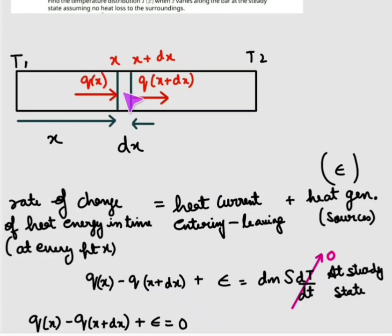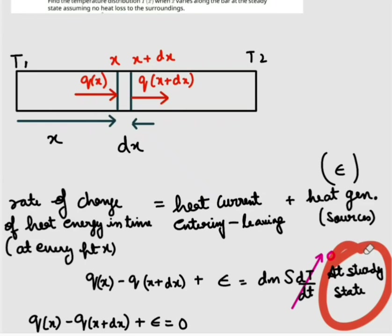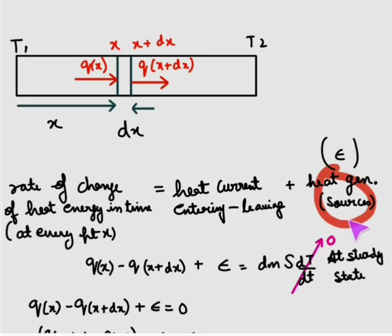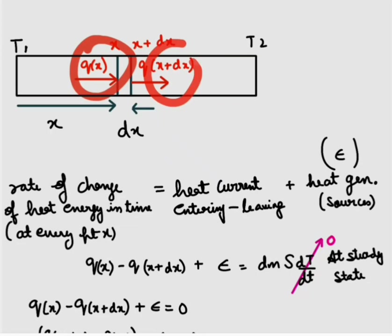We can write that Q at x equals the electric power, which equals dm·(dT/dt). At steady state, the derivative of temperature with respect to time is zero. So we write: Q(x) - Q(x + dx) + E = 0, where E is the heat generated by the electric current.